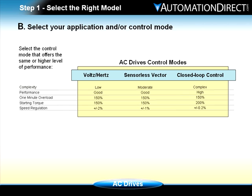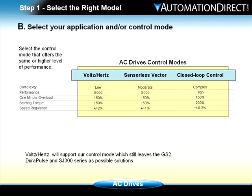There are three control modes available. Volts/Hertz, which is open loop control, takes the speed reference from an external source and varies the voltage and frequency to control the speed of the motor. Sensorless vector, although similar to Volts/Hertz, has internal feedback that monitors reflections from the motor to determine speed. And closed loop, which uses encoder feedback. Volts/Hertz will support our control mode, which still leaves the GS2, DuraPulse, and SJ300 series as possible solutions.